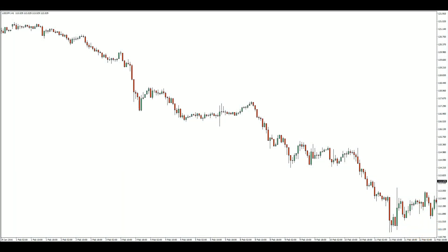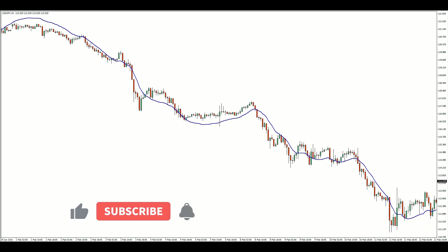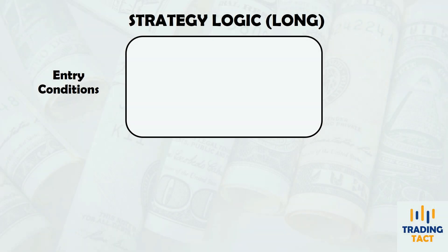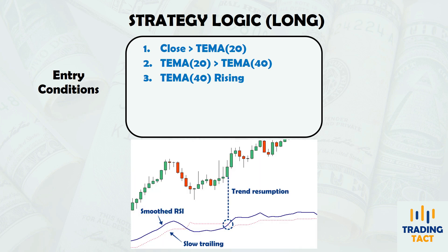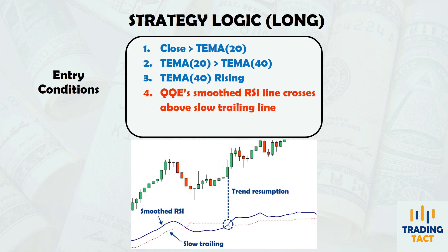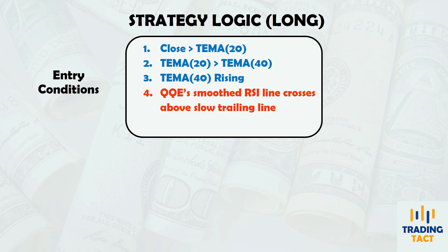The idea is to jump on board a long-term trend during a pullback. I will use the triple EMA to help me trade in the direction of the longer-term trend. For longs: the close must be above the 20-period triple EMA, which is in turn above the 40-period triple EMA, and the 40-period triple EMA must be rising. The QQE will be used to detect the resumption of the main trend after a pullback — I will go long when the smooth RSI line crosses above the slow trailing line, indicating bullish short-term momentum. Finally, I will avoid entering on Monday since that is usually the day with the lowest volatility.